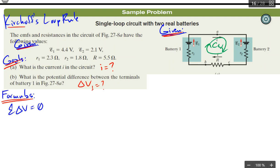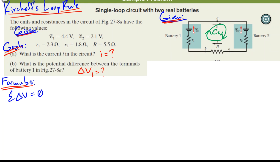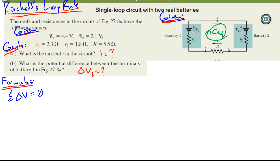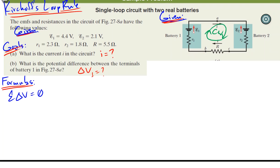Okay, there's actually no junctions in here, by the way, because there's only one loop. You only use the junction rule when you have current splits into at least two other branches. And definitely for a double loop circuit. In this case, we're not using that at all.